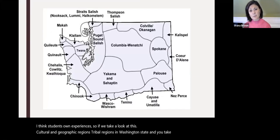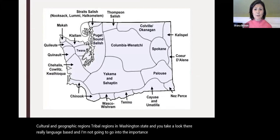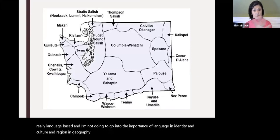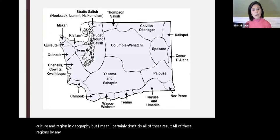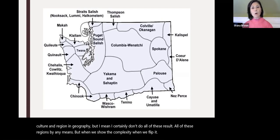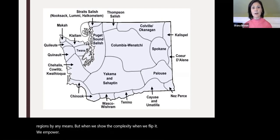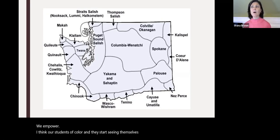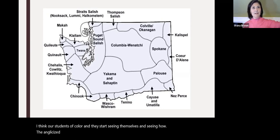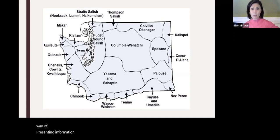I'm not going to go deep into the importance of language, identity, culture, region, and geography, but when we show that complexity and flip it, we empower students of color. They start seeing themselves and seeing how the Anglicized, colonized educational way of presenting information — even diverse, multicultural, multi-perspective information — is not the only way, and that we value them.